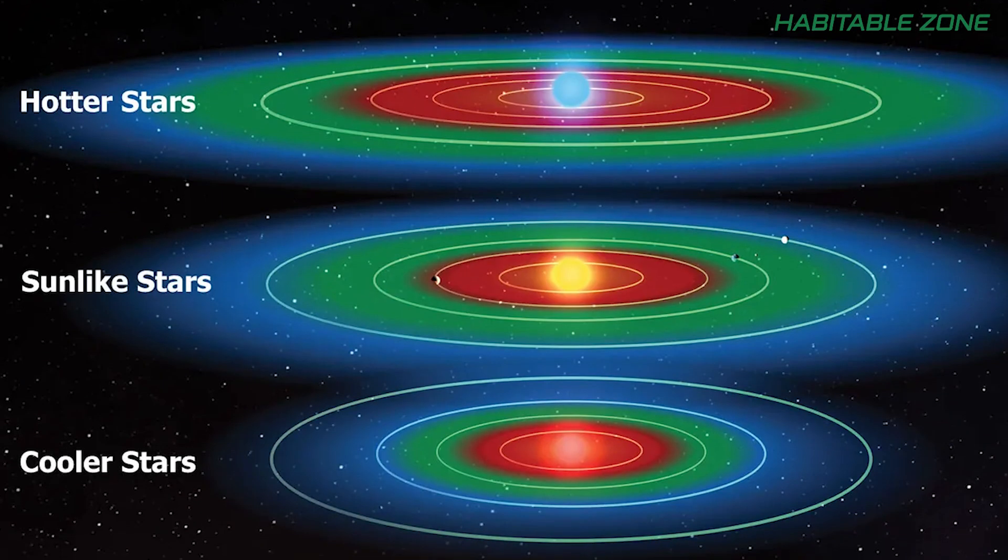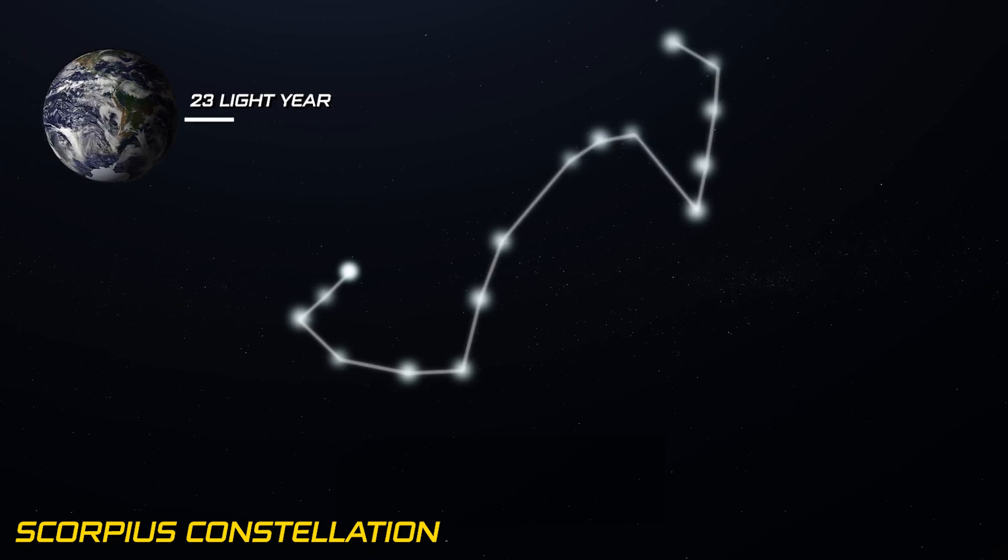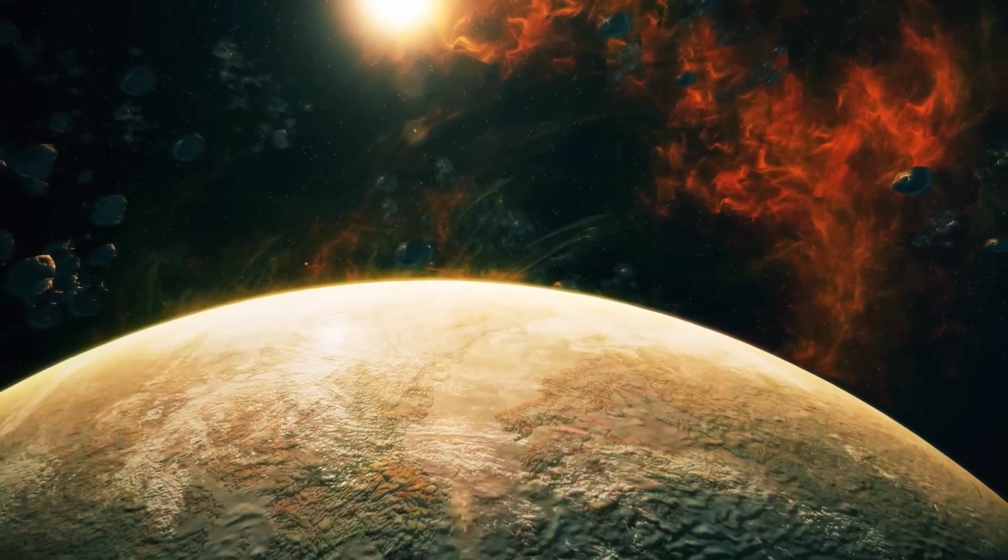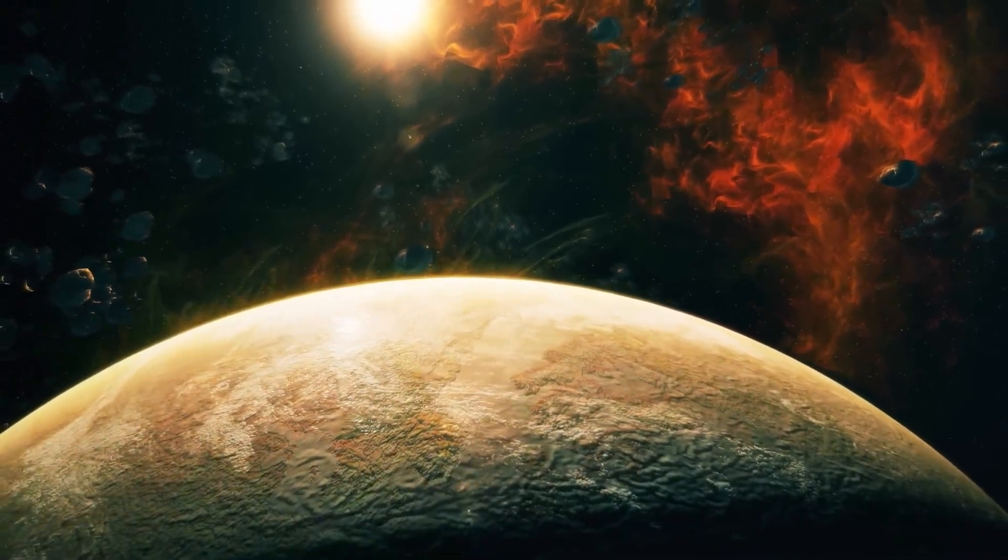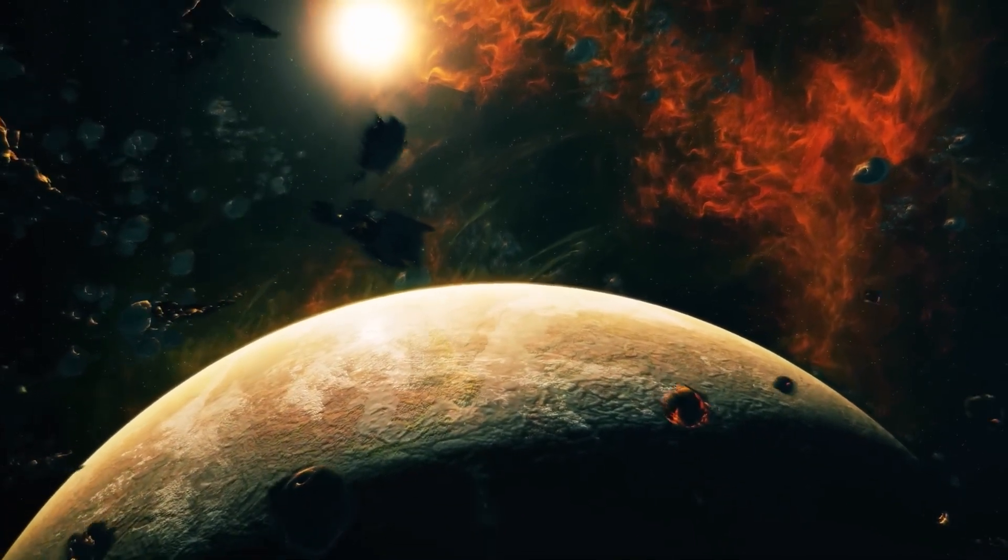Enter Gliese 667 or GJ 667, a triple star system nestled in the Scorpius constellation, a mere 23 light-years from our humble abode. This system stands as the pioneer, showcasing the first known example of a low-mass star hosting multiple potentially habitable rocky planets within its Goldilocks zone.